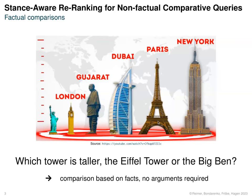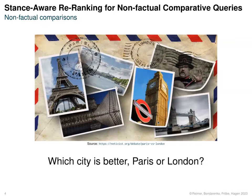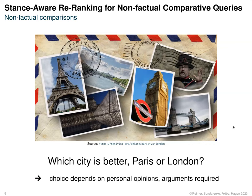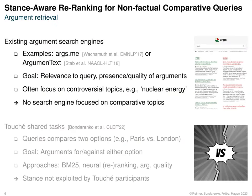So we are more interested in more subjective non-factual comparisons like this: which city is better, Paris or London? And there, the choice really depends on personal opinions and therefore requires argumentative answers. And argument search engines can support such decisions.